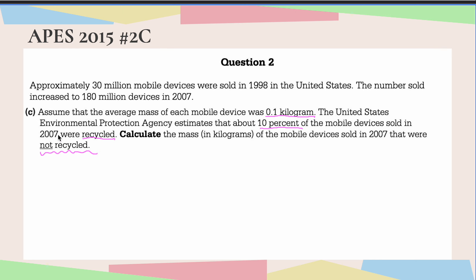Calculate the mass in kilograms of mobile devices sold in 2007 that were not recycled. And the keyword there, and that's why it's underlined, is we're looking for how many were not recycled. So again, in 2007, we had 1.8 times 10 to the 8th devices sold.